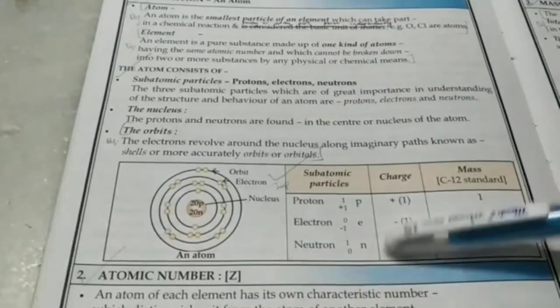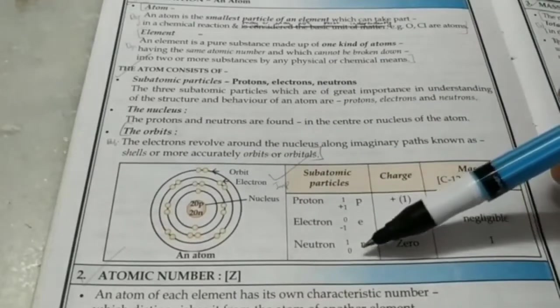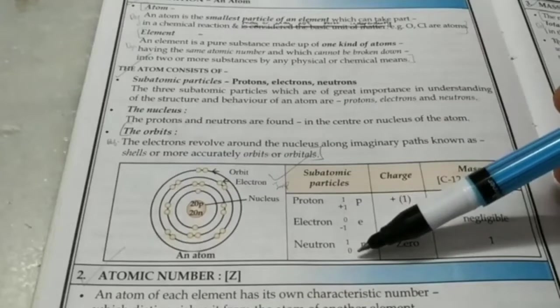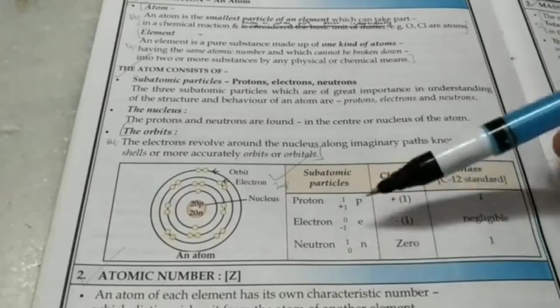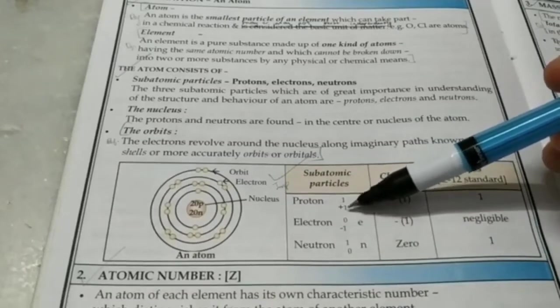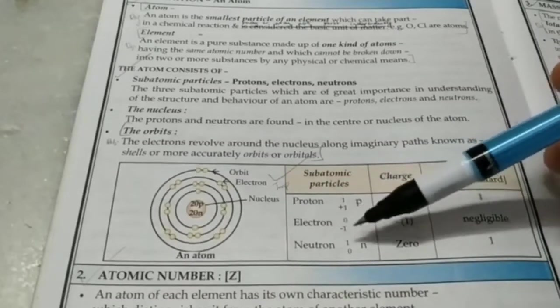Protons, electrons and neutrons are represented like this. The lower number for an element usually is the atomic number, and the upper number is the mass number. But for the subatomic particles, the lower number represents the charge, so positive charge here, a negative charge. Neutrons are neutral.